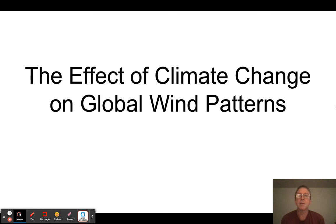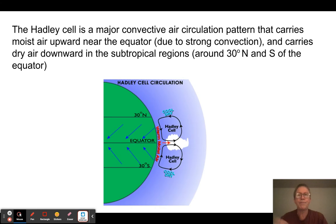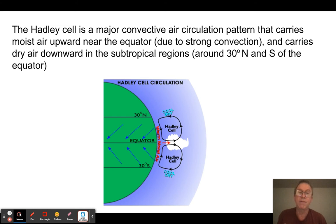Remember a while back we talked about global wind patterns? What we're going to do now is look at how these global wind patterns are affected by global warming. So if you recall, there are three major convective cells. The main one is the Hadley cell.